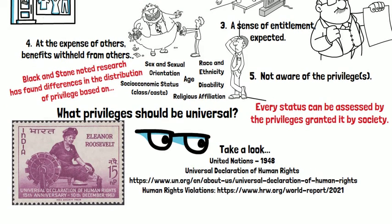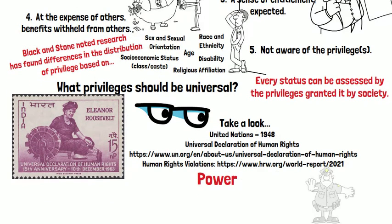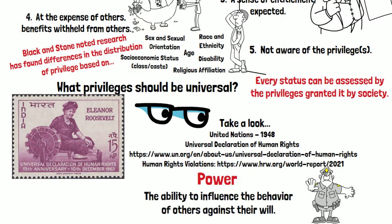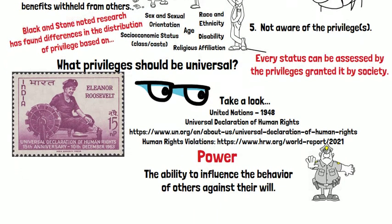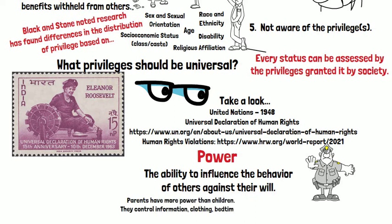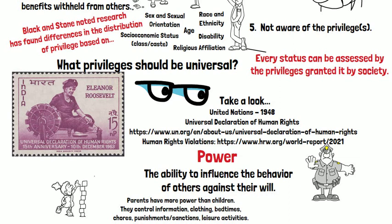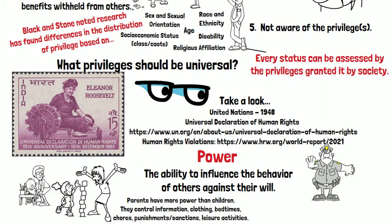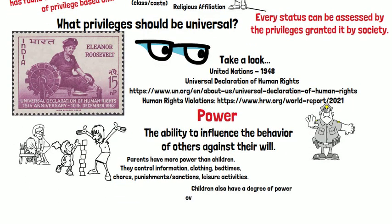The last factor to consider when looking at rankings of statuses and privileges is that power is a special privilege — the ability to influence behavior of others against their will. We can see that parents have more power than children: parents control information, clothing, bedtime, chores, punishment, sanctions, and leisure time activities. But we also have to recognize that children have a degree of power over parental behaviors.